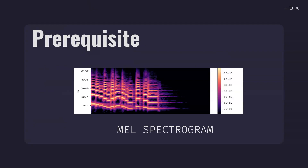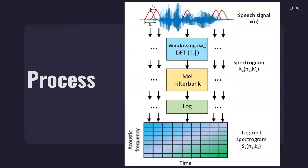You should know what a Mel spectrogram is and the process used to extract it. Let me give you a quick recap. We start from the raw audio file, divide the audio signal into overlapping frames, apply a Hamming window technique, then apply STFT (Short-Term Fourier Transform). The output of STFT is a power spectrogram. We then apply a Mel filter bank to obtain the Mel spectrogram.